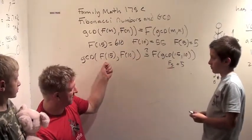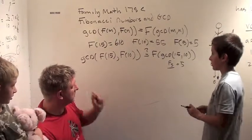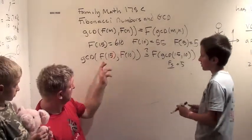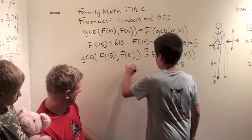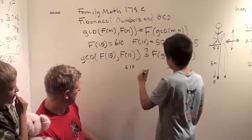So what is Fibonacci 15? Fibonacci 15... 610. Very good, 610. And Fibonacci 10 is 55.